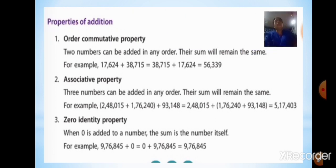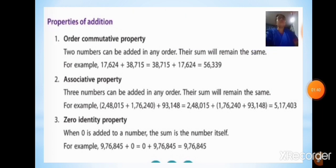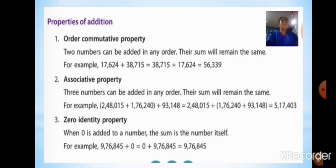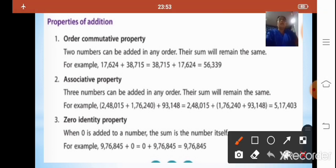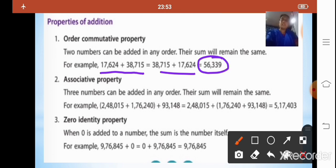Let us take a quick recap of the properties of addition. The first property is the commutative property, which tells us that two numbers can be added in any order and the sum will remain the same.